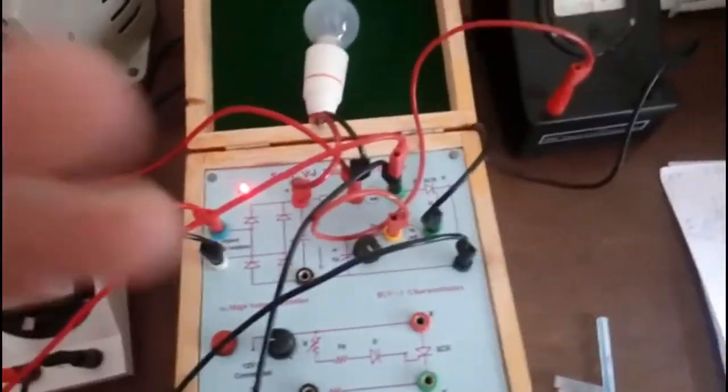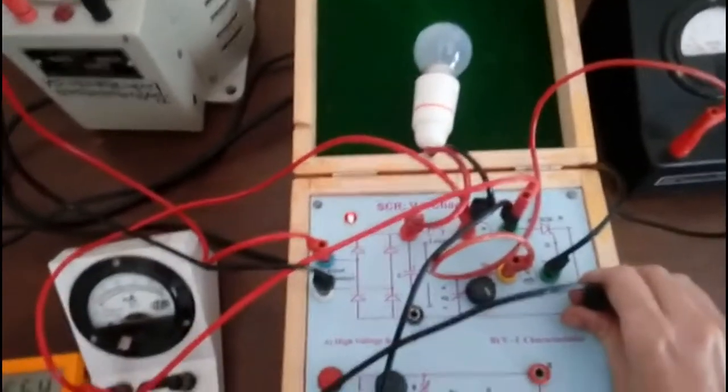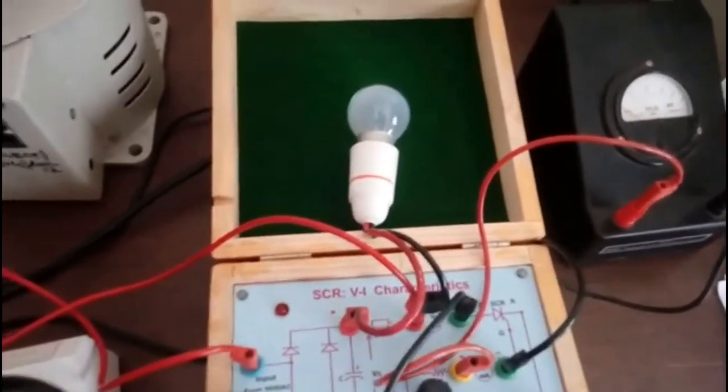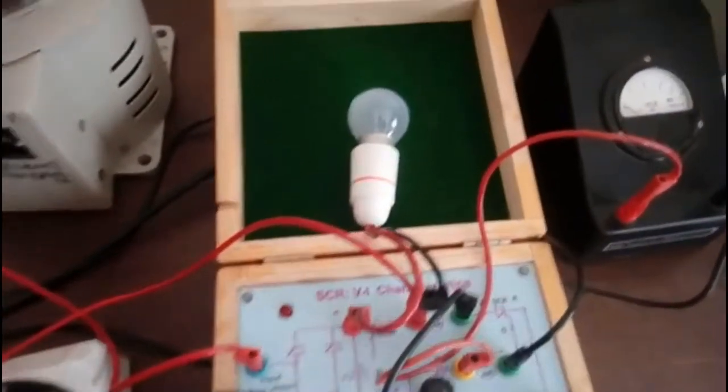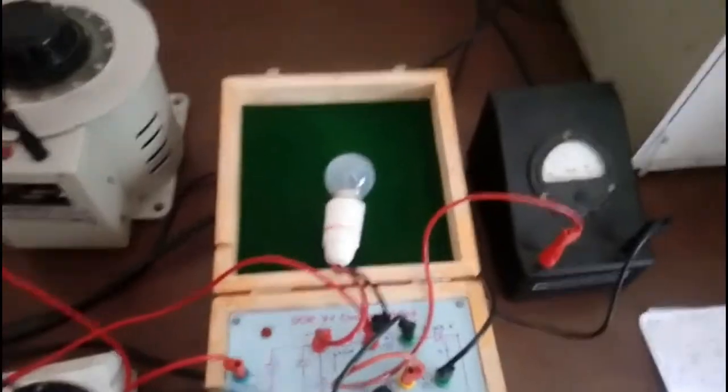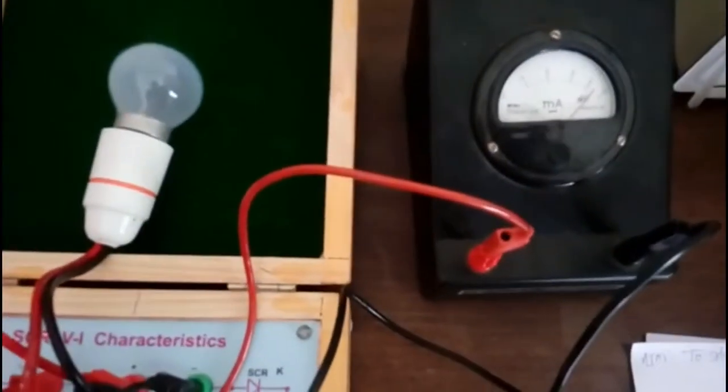And this we have taken for one reading. You can avoid it if you want. Then next, you need to switch off because whenever you have to make any changes in the connections, kindly switch off the variac and the kit. You need to follow the safety precautions also. Just check the value of gate current, switch on, and see here I'm just making it to 3.1 milliampere.